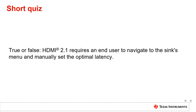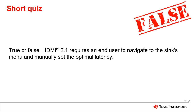True or false: HDMI 2.1 requires an end user to navigate to the sync's menu and manually set the optimal latency. False. HDMI 2.1's Auto Low Latency Mode feature allows the HDMI source to enable or disable the HDMI sync to set the optimal latency.